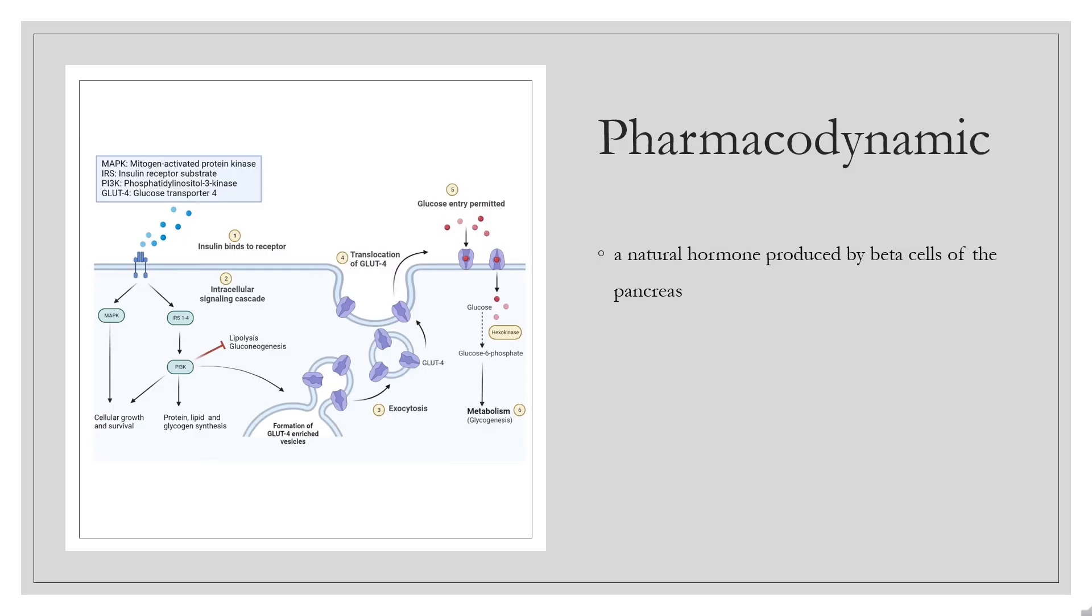Pharmacodynamic: Insulin is a natural hormone produced by beta cells of the pancreas. In non-diabetic individuals, the pancreas produces a continuous supply of low levels of basal insulin along with spikes of insulin following meals. Insulin promotes cellular uptake of glucose, particularly in muscle and adipose tissues.